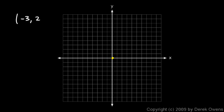The origin here is 0, so from there we go to the left 1, 2, 3. That's 3 in the negative x direction, which is to the left. And then my y coordinate is 2 in the positive direction, so 1, 2 puts me right here. This point right there is the point negative 3, 2.